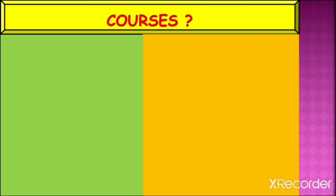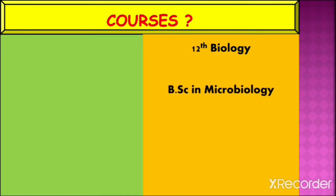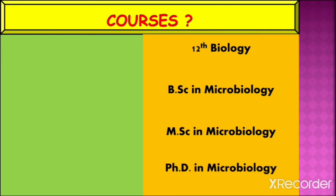Which courses are available in India to become a microbiology scientist? Here is a list: first, one should have qualified 12th in biology with first class, then B.Sc. in microbiology with first class, M.Sc. in microbiology with first class, and Ph.D. in microbiology with first class.